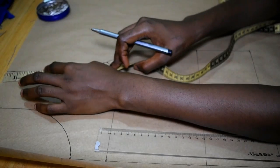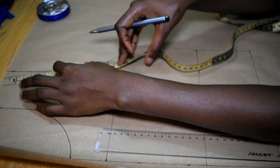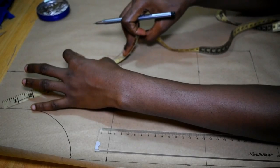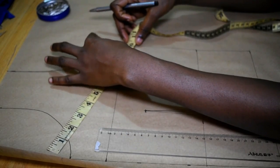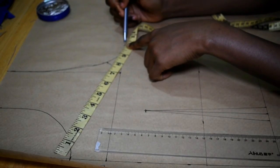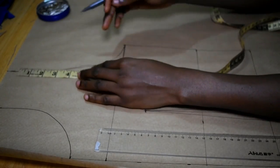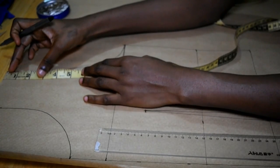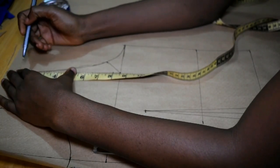Then the armscye - you're going to do the same thing as I did for the front bodice or as you will do for the front bodice: measure out the curve, divide it into two, and then add an extra allowance.